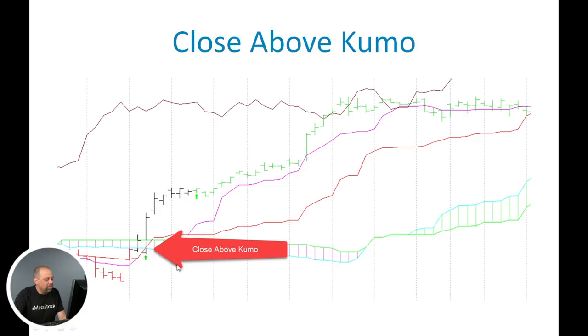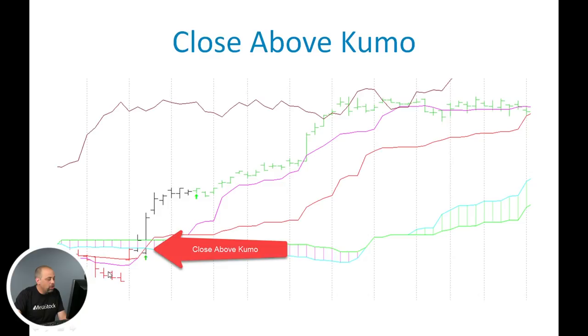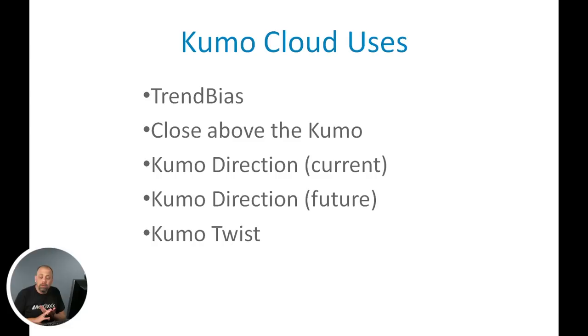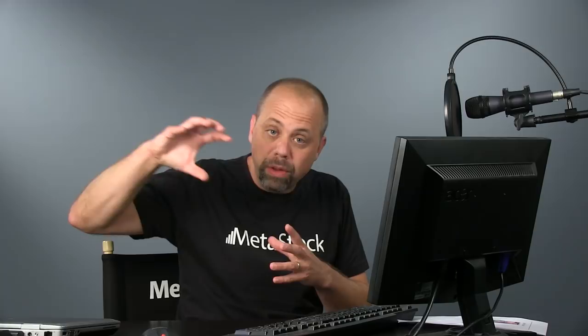Here's a closer image of that — prices were down below the Kumo, they come up and cross above the Kumo, giving you a buy signal on the chart. For the Kumo cloud, you can use it as a trend bias, as a signal when price closes above the Kumo, and you can look at Kumo direction. The angle of the Kumo is very important — if it's angled up, it's bullish; if it's angled down, it's bearish. If your Kumo is trending up, you'd use that as a rising support level and expect continuation of a bullish trend. The Kumo twist is the relationship of Senkospan A, whether it's above or below Senkospan B on the chart.